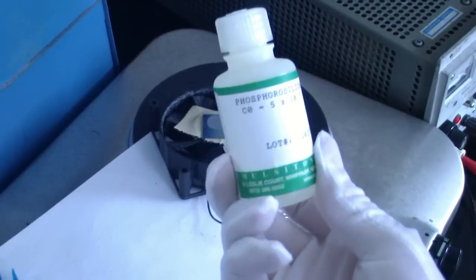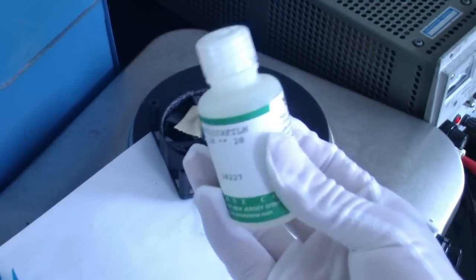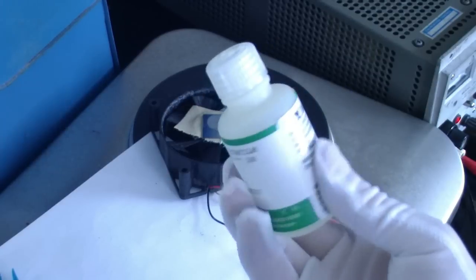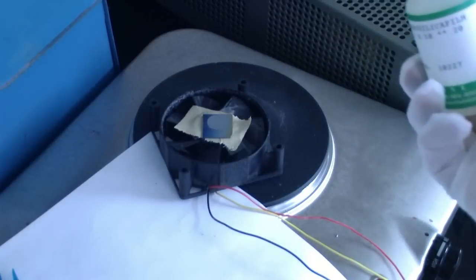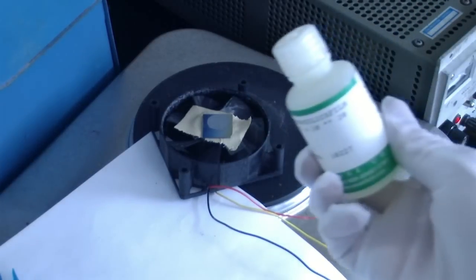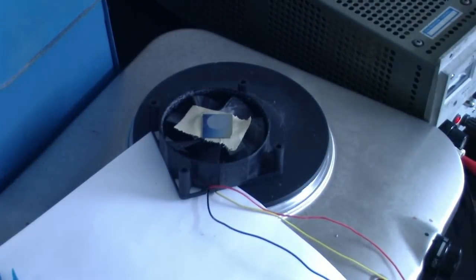Alright, here's the dopant, it's phosphorosilicate from a mulcetone. It's a very thin liquid. I'm going to put some onto the wafer, which is sitting on the CPU fan, and I'll turn my power supply on, and it will spread the dopant into a nice, even layer.